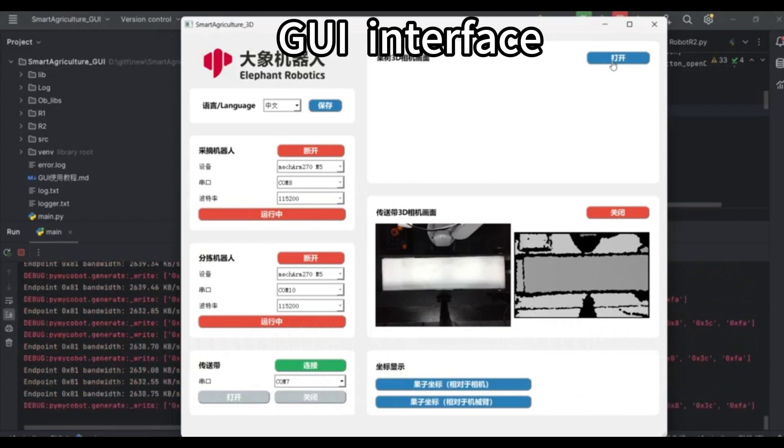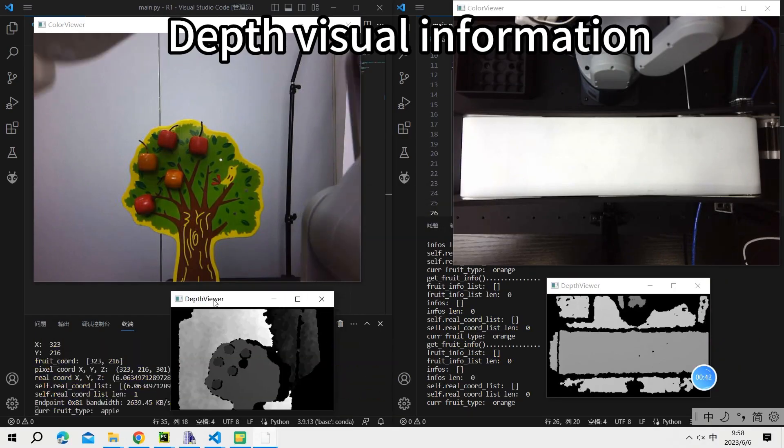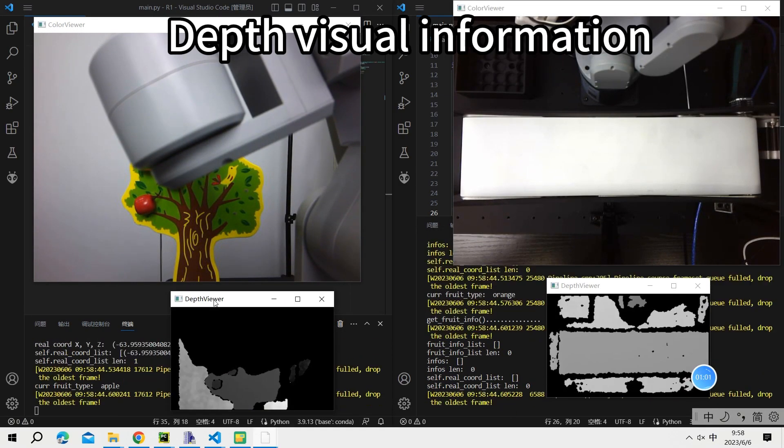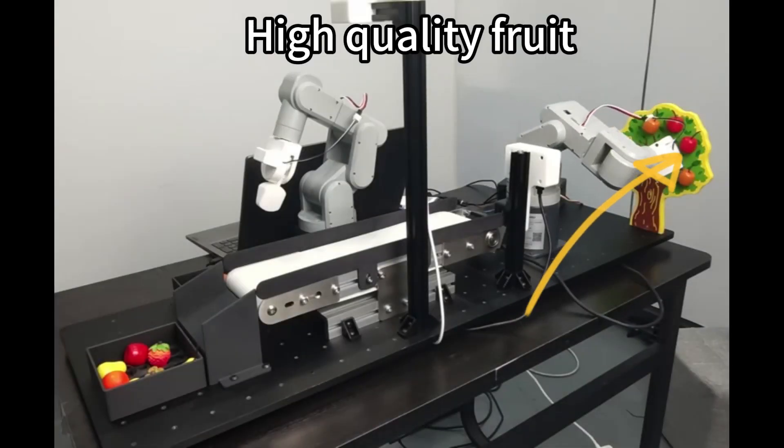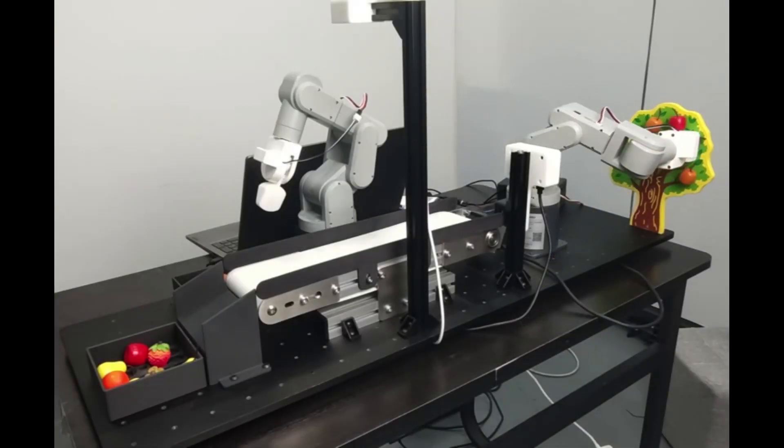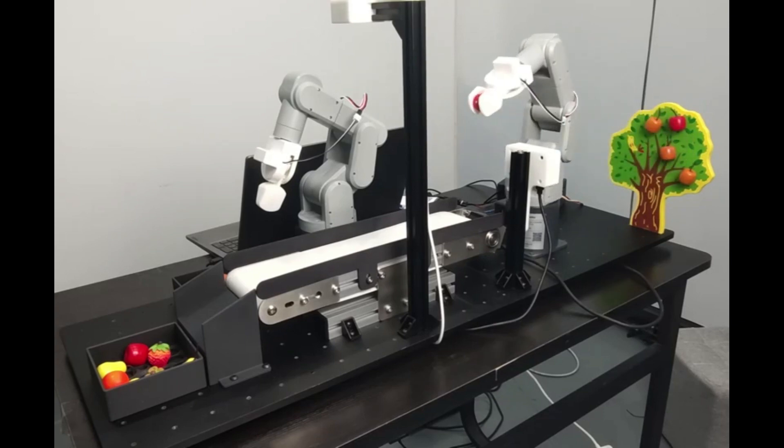Harvest Robot uses the depth camera to recognize the fruit on the tree and then locate it. The coordinates of the fruit are sent to Harvest Robot for picking. Through picking by Harvest Robot, the fruit is placed on the conveyor belt.